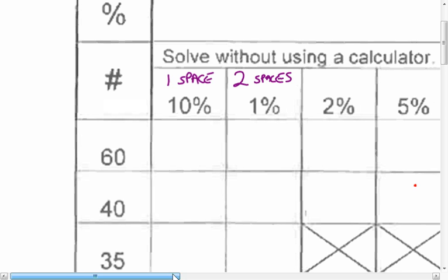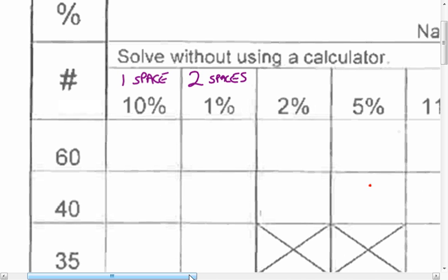All right, what about 2%? 2% is just 1% plus 1%. It's two 1%s. How about 5%? 10%. That's half of 10%.